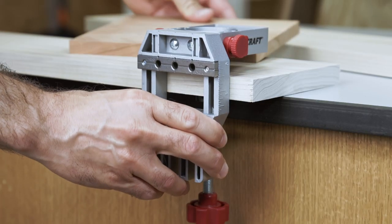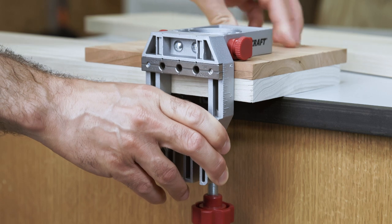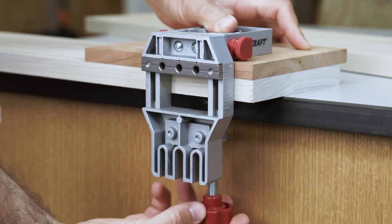The all-metal construction means the jig won't bend or flex when joining boards, creating a stronger and more consistent joint.